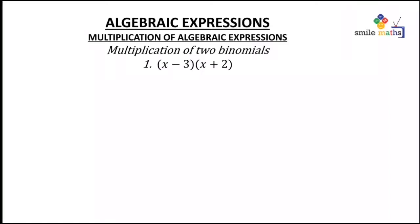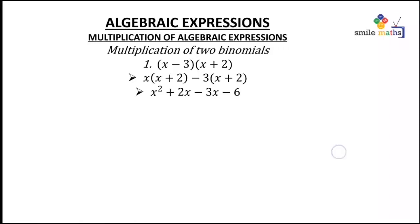Now let's look at multiplication of two binomials. Question one: (x − 3)(x + 2). The first term in the first bracket multiplies the whole second bracket, and likewise the second term. So x multiplies (x + 2) and negative 3 multiplies (x + 2). This gives x times x which is x², plus x times 2 giving 2x, minus 3 times x giving 3x — negative times positive gives negative — then 3 times 2 giving 6. So we have x² plus 2x minus 3x, which gives x² minus x minus 6.